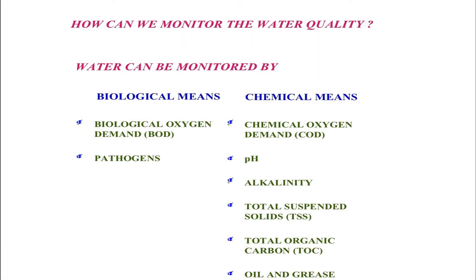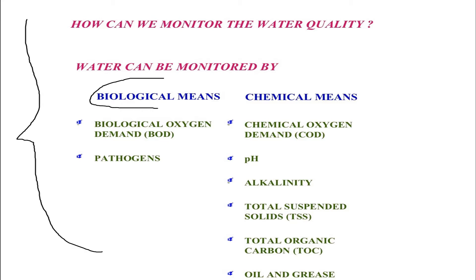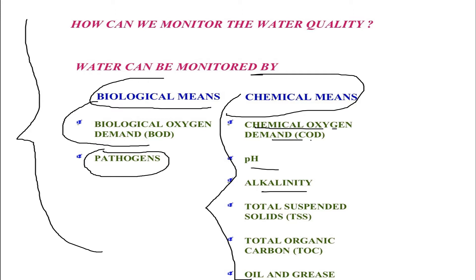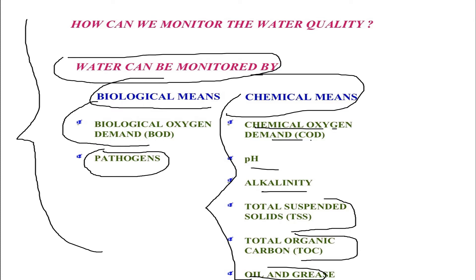Talking about water pollution — how can we monitor water quality? How do we get to know whether water is polluted or clean? There are two methods: biological and chemical. Under biological we have the percentage of Biological Oxygen Demand (BOD) and the amount of pathogens present in a particular quantity of water. Under chemical we have COD (Chemical Oxygen Demand), pH, alkalinity, total suspended solids, total organic carbon, and oil and grease.